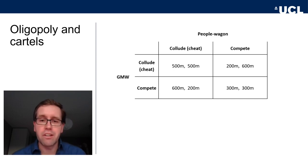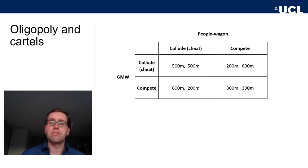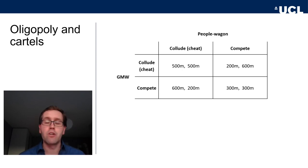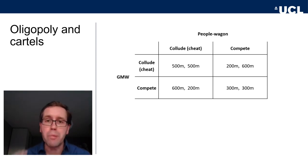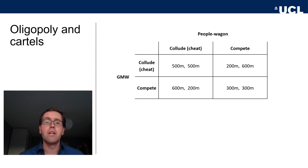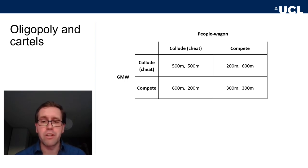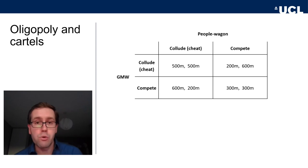GMW has an incentive to compete on cleaner engines, but the clean tech costs 200 million to implement, so they lose some profit. However, if you are offering the cleaner car, maybe you sell 80% of cars versus 20% for the competition. If GMW decides to compete on clean engines while People's Wagon does not invest in this technology, GMW corners 800 million worth of car sales but incurs 200 million in development costs, ending up with 600 million profit. People's Wagon, by contrast, only gets 200 million.